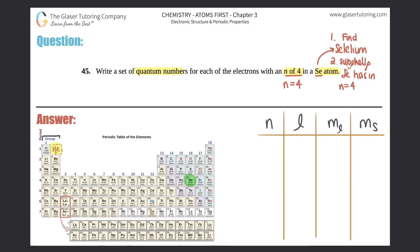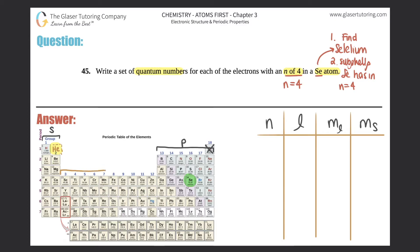The first two columns, from period one all the way down to seven, are the s subshells — that's where your s subshells are located. Remember, helium is no longer on the right side. The p's run from this column all the way across this block. And the d's are located in the middle block, from here all the way over to here — that's where your d subshell lives.